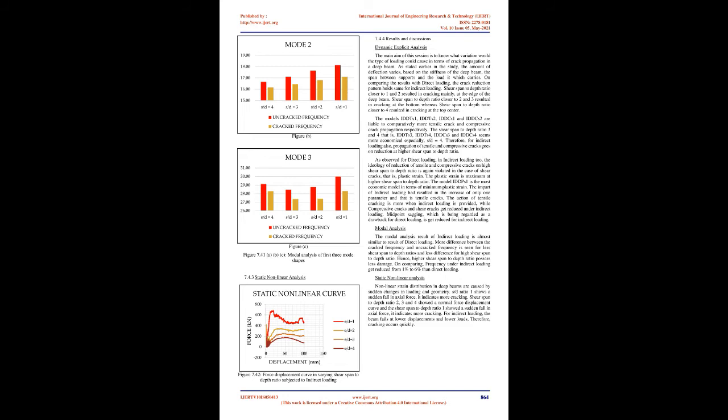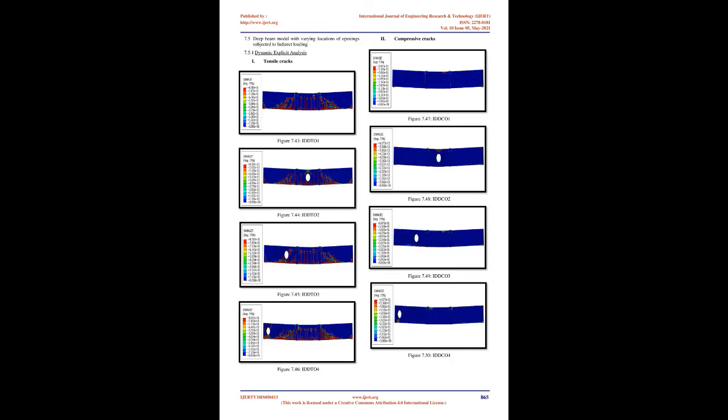Deep RC beams have been widely used in high-rise buildings as load distributing structural parts of transfer girders, wall footing, pile caps, floor diaphragms, and shear walls. External loads are generally placed via shear brackets on the sides of the beams for indirect loading. Crack widths and deflections are more rarely encountered in direct loading than in indirect loading; these widths and deflections are more often experienced during indirect loading near the bottom than near the top. Beams with web reinforcement generally exhibited narrow cracks, few deflections, and mild tensile steel strain.